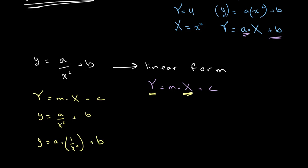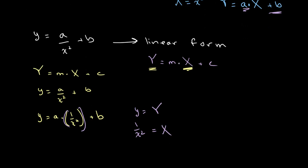We rearrange the equation: Y equals a times (1 over x squared) plus B. Now if we take capital Y equal to Y and capital X equal to 1 over x squared, we get the equation in the form Y equals A times capital X plus B, which matches the linear format.